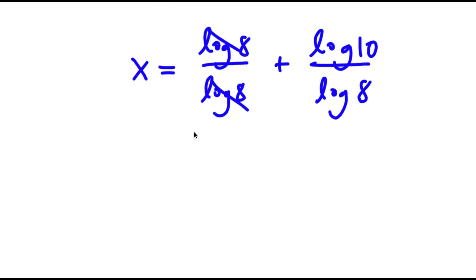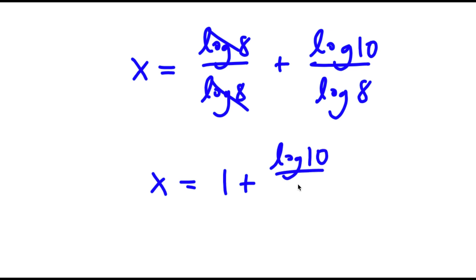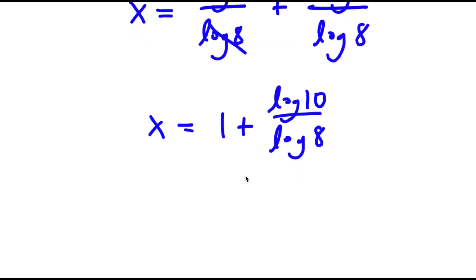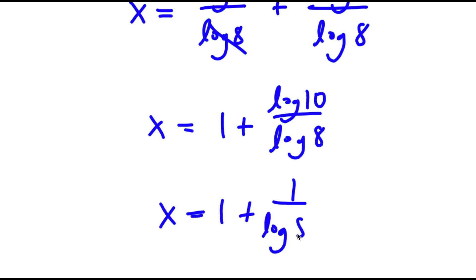Now log 8 and log 8 cancel out. So now I have x is equal to 1 plus log 10 over log 8. Log 10 is equal to 1, so I have x is equal to 1 plus 1 over log 8.